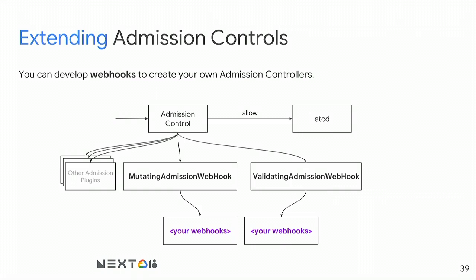As of Kubernetes 1.9, you can write your own admission plugins. You create a pod and it passes through a mutating admission webhook, which calls your registered webhook and allows you to modify API objects before they're created. Validating admission webhooks just decide if the pod is acceptable or not. If the pod doesn't look good, you reject it and the user sees an error in kubectl. This is a way to extend Kubernetes's authorization model and enforce stricter policies by writing simple webhooks.